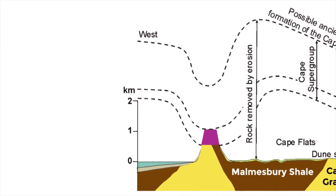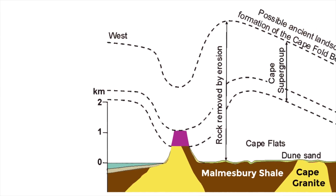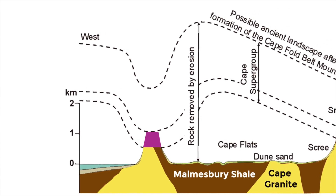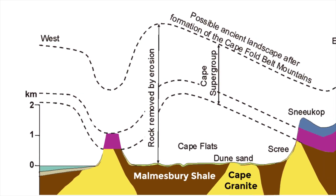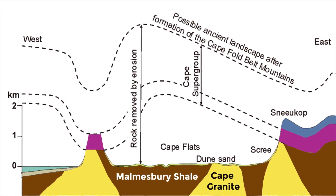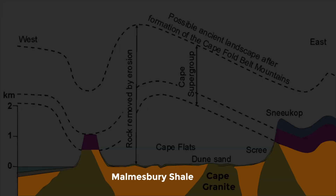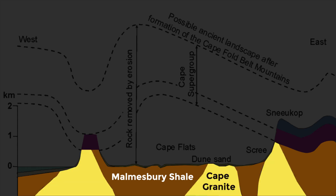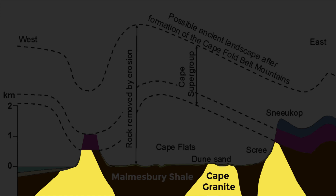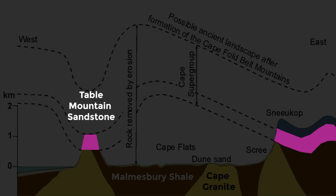Rock types of varying resistance beneath the earth's surface had a pivotal role to play. There were three key rock groups underlying the Fold Mountains in the Cape Town area: Malmesbury Shale, a relatively soft sedimentary shale which is easily worn away; Cape Granite, formed through the cooling and solidification of magma or lava; and Table Mountain Sandstone, hardened sedimentary sandstone formed from layers of compacted sand, silt and mud deposits, composited on top of the granite and Malmesbury Shale.